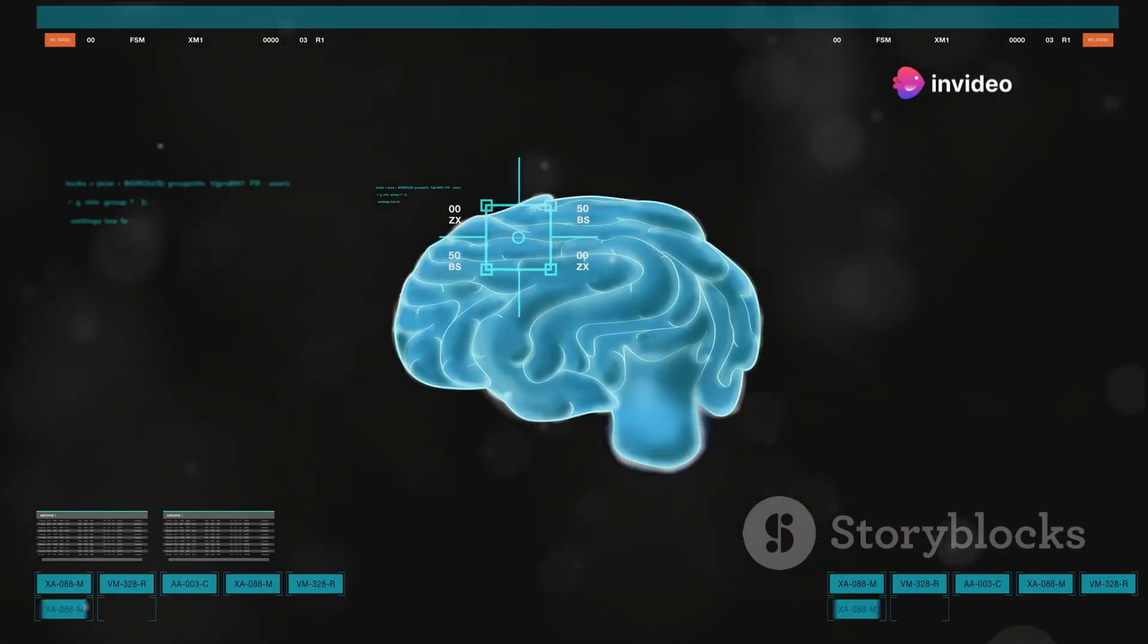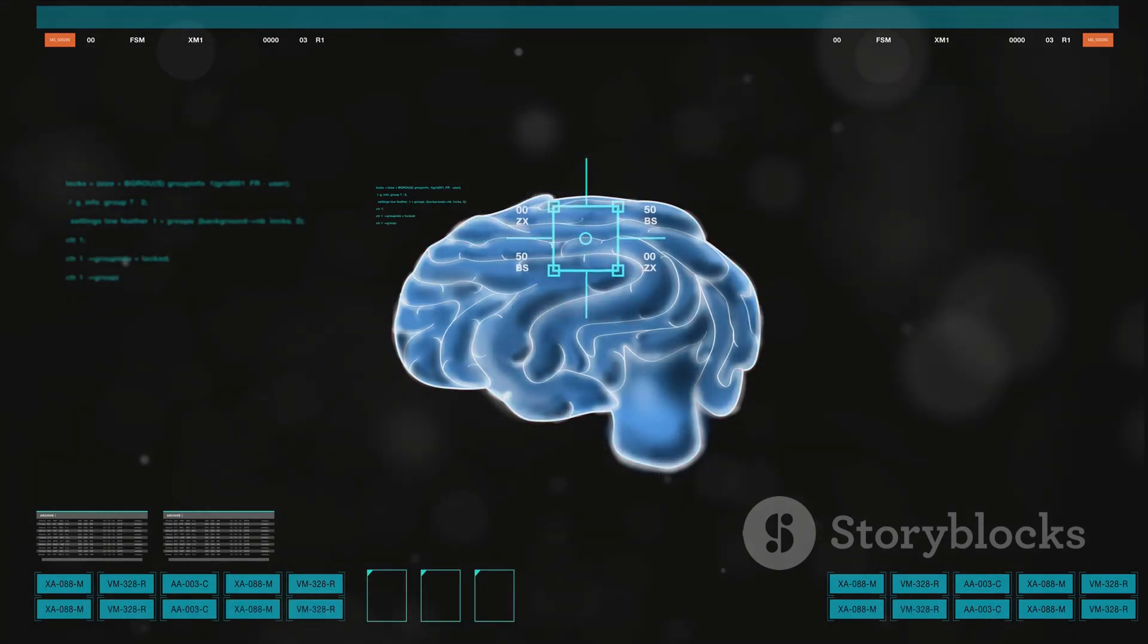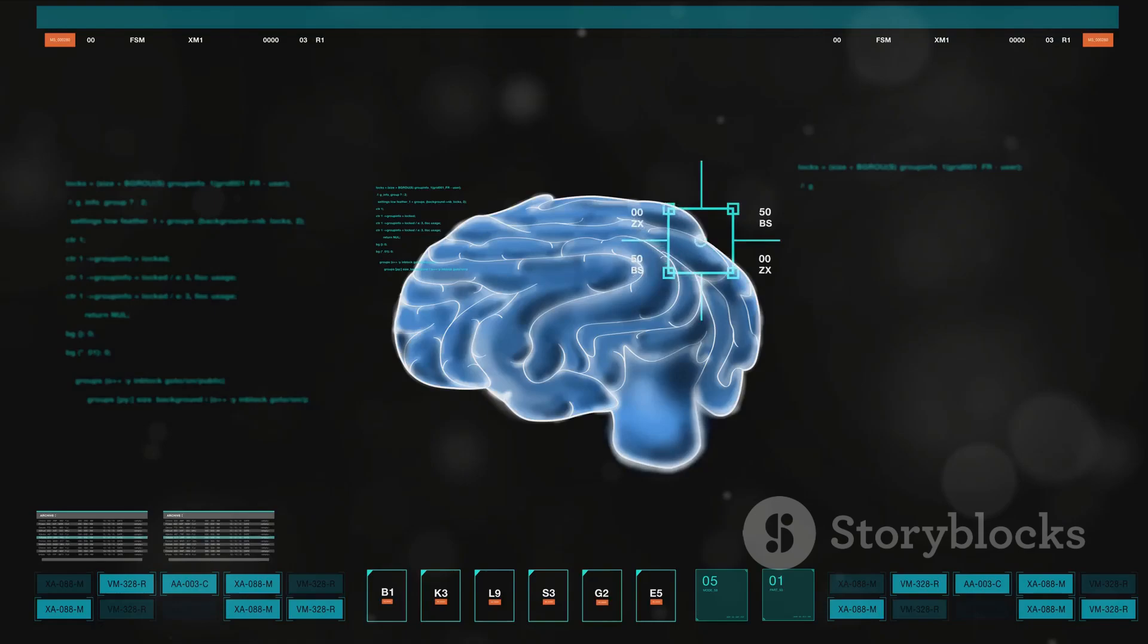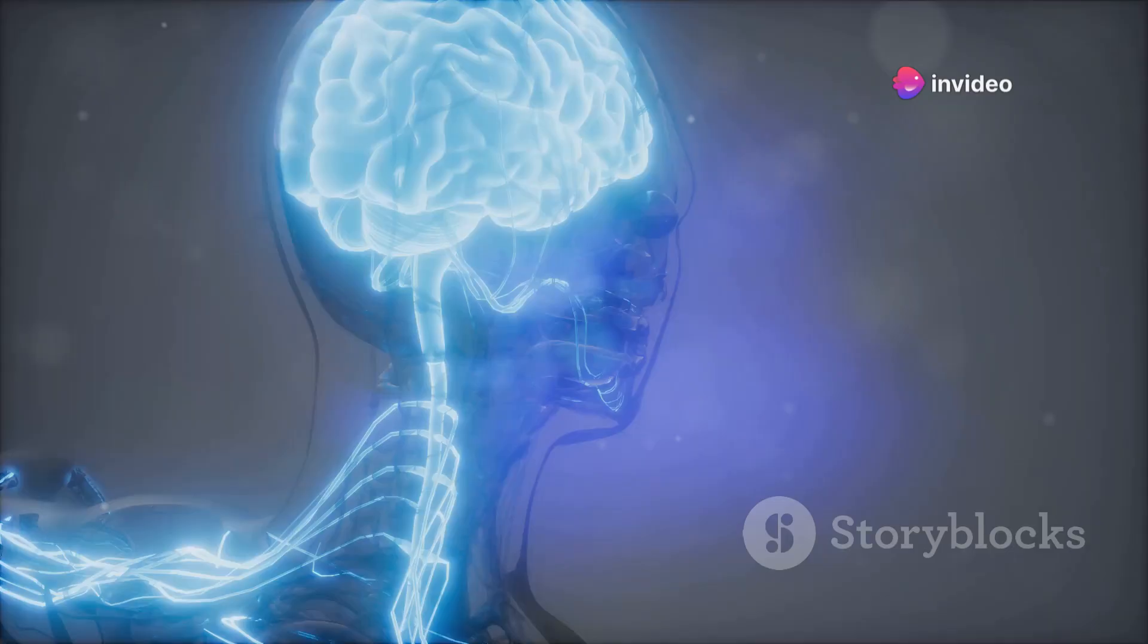Meanwhile, the hippocampus, a tiny seahorse-shaped structure, is busy creating and storing memories. It's like the factory's archive, storing away all the processed information for future use.